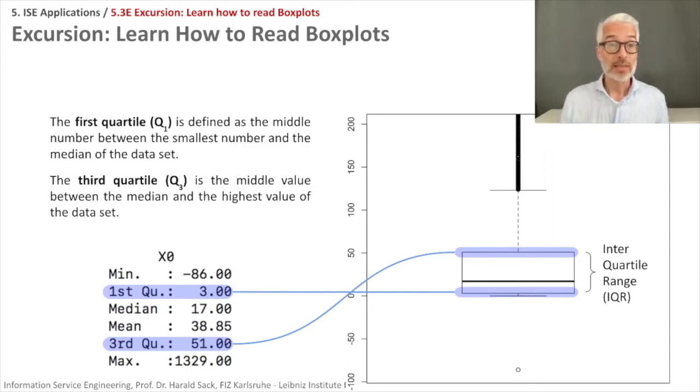And the third quartile is the middle value between the median and the highest value of the dataset. And again then, between these two quartiles, this is the so-called interquartile range. There you find already 50% of the data. And you see here that 50% of the data is between 3 and 51. So this gives you further ideas about the distribution of your data.